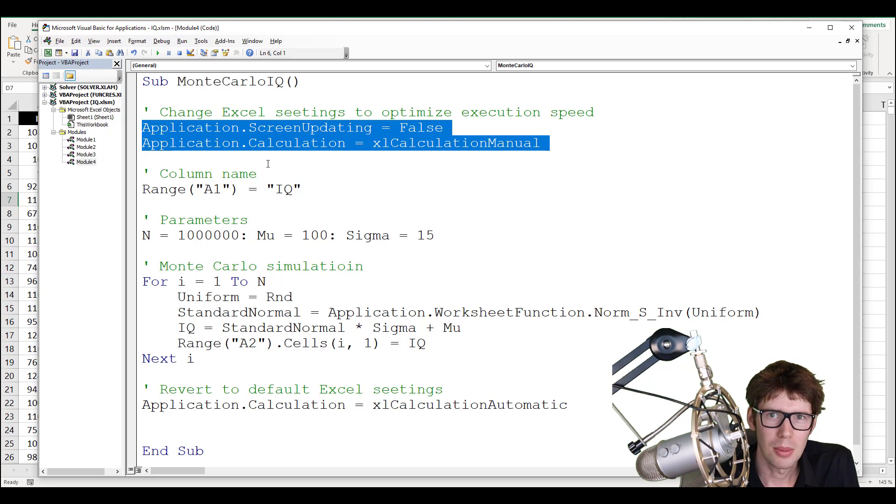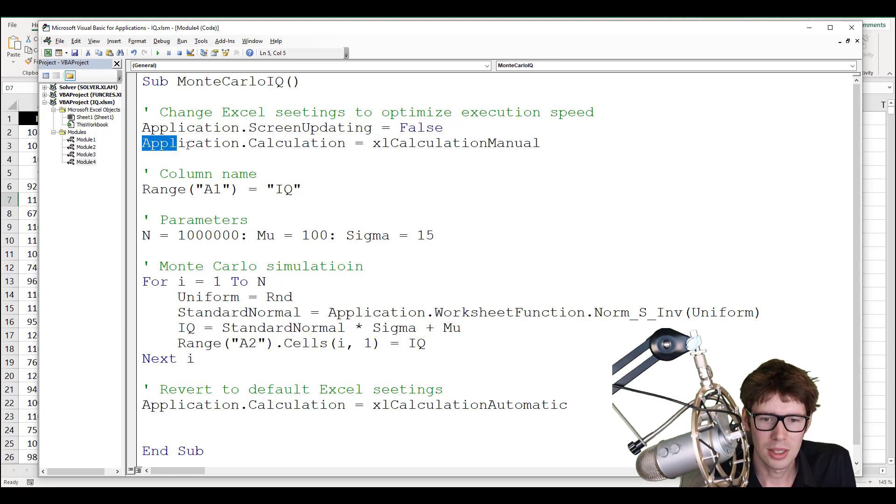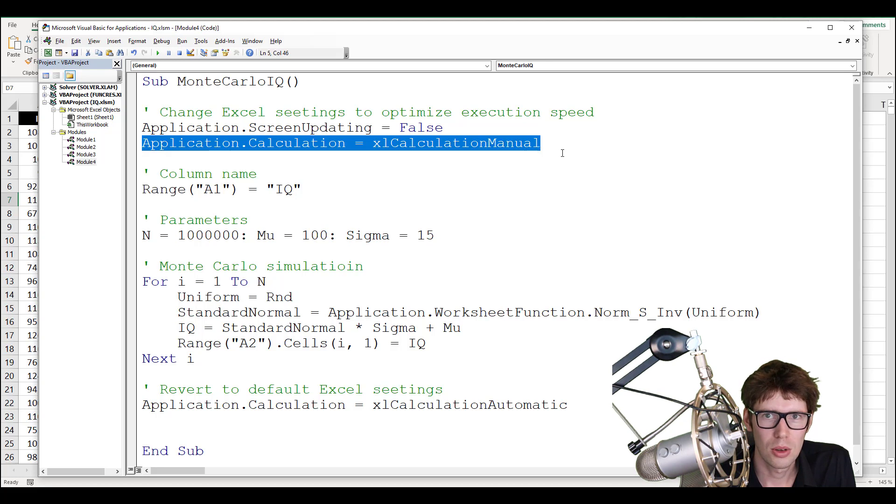Since we are simulating a million different draws here, Excel wants to output it or update the screen for every single iteration. It goes too fast for us to see, but it slows down the computer tremendously. So what I've done is to temporarily ask it to just don't update the screen for each iteration, update the screen once you've done with all million iterations. And the second one here is to ask Excel to stop updating every single cell.